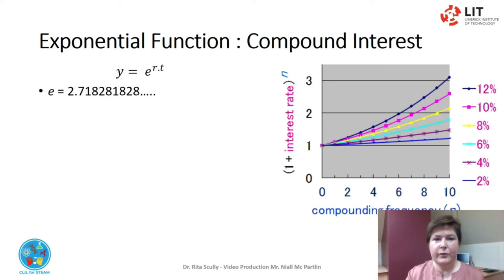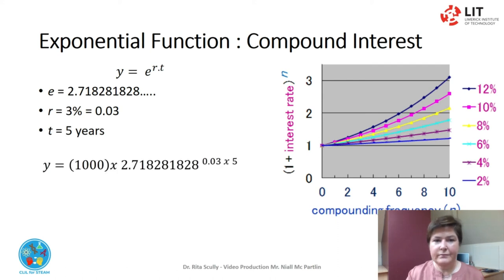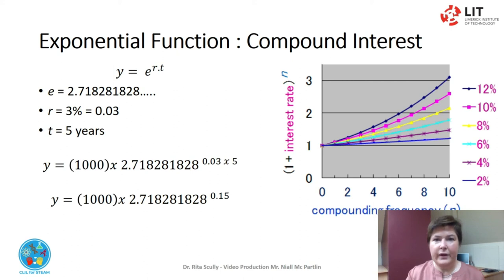e is 2.71828 1828 and on. r is the rate: 3%, or 0.03. And t is the time — in this case, five years. So y equals 1,000 by 2.718281828 to the power of 0.03 by 5. y equals 1,000 by 2.718281828 to the power of 0.15. y equals 1,161 euros 83 cents.